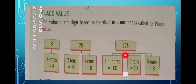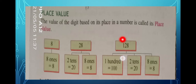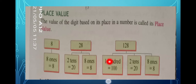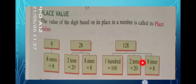Now if I write the number 128 — 8 is in the ones place, so eight ones, which equals eight. 2 is in the tens place, so two tens, which means twenty. And 1 is in the hundreds place, so one hundred.